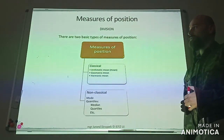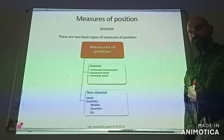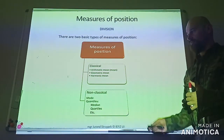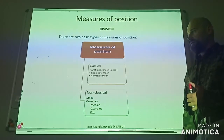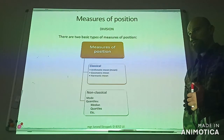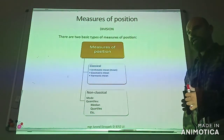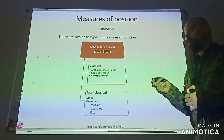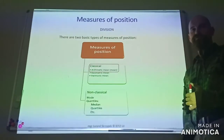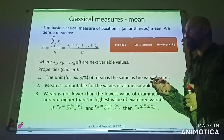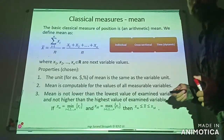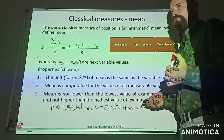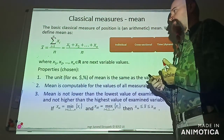Measures of position can be divided into two basic groups: classical ones and non-classical ones. At the beginning we will discuss classical measures of position, and arithmetic mean goes first. Arithmetic mean, or simply mean, is the basic, well-known measure of position.